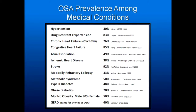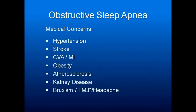Look at the prevalence among all these medical conditions — the percentage of people that have obstructive sleep apnea, and yet their physicians are not diagnosing it. Your cardiologists are dealing with people who have high blood pressure, strokes, MIs, and they are not getting them for sleep studies. You've got to enroll these patients. The medical concerns include hypertension, stroke, MIs, cardiovascular accidents of any form, obesity, atherosclerosis, and kidney disease.